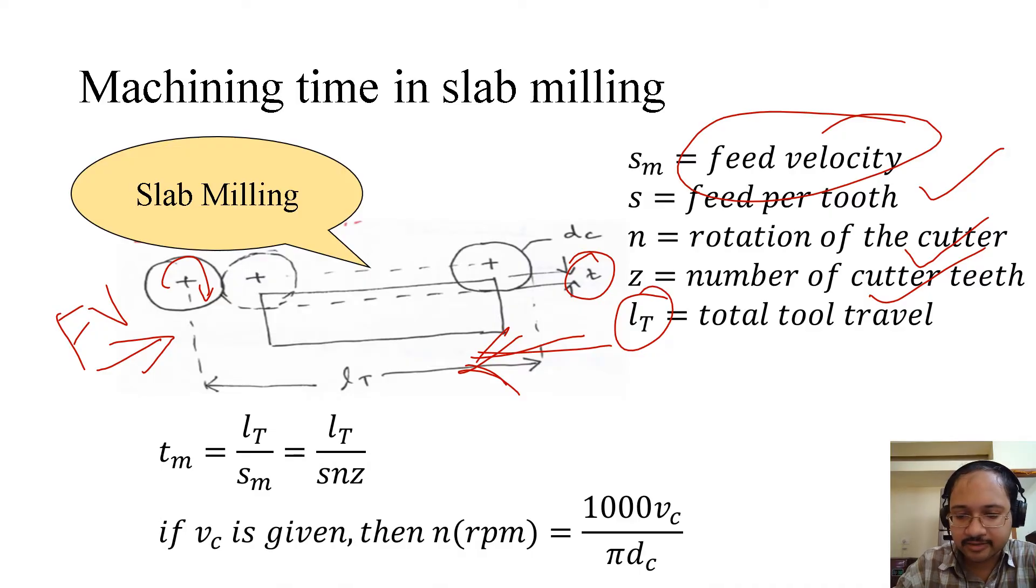Now tm is lt over sm, which we have already seen in case of turning operations, and sm is nothing but s times n times z - that is feed per tooth times rotation of the cutter times number of teeth. If vc is given, then obviously we have to find out n which is in rpm, that is 1000vc divided by pi dc, that is the diameter of the cutter.